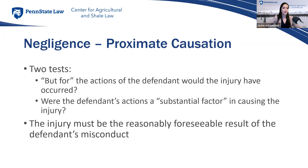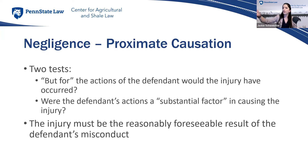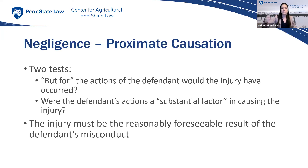For proximate causation, there are two tests: the but-for test — but for the defendant's actions, would the injury have occurred? — and whether the defendant's actions were a substantial factor in causing the injury. The injury must also be a reasonably foreseeable result of the defendant's misconduct. If Farmer Larry tells a guest to grab a bucket and the guest is struck by lightning while walking to it, that meets the but-for test but a lightning strike is not a reasonably foreseeable result of his instructions — so no proximate causation, no negligence.